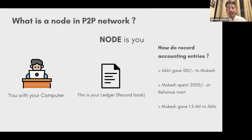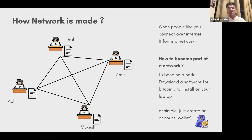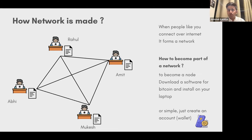Consider yourself as a simple person with a computer and a ledger. A ledger is like an accounting book where you record transactions — for example, 'Abhi gave 100 rupees to Mukesh.' Now imagine four different people — Abhi, Mukesh, Rahul, and Amit — all have the same ledger with the same entries. When they all connect to each other on the internet, it becomes a peer-to-peer network.